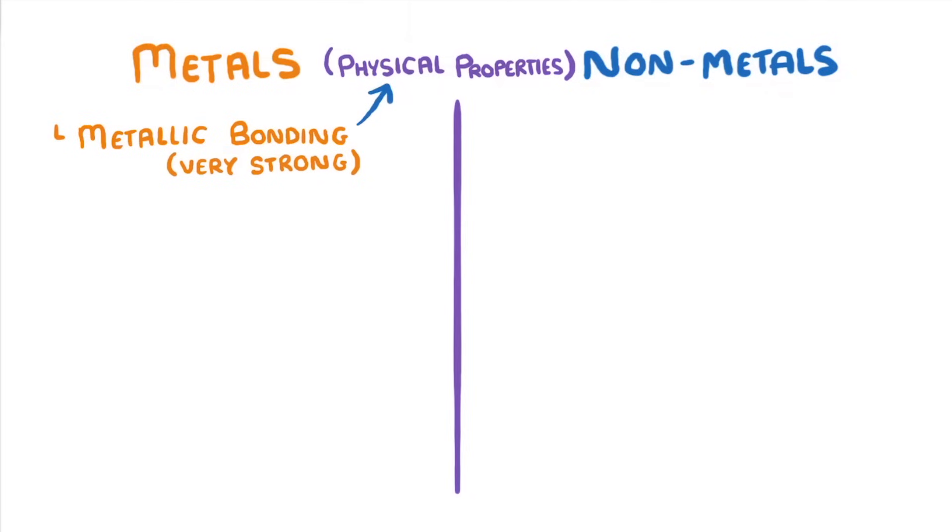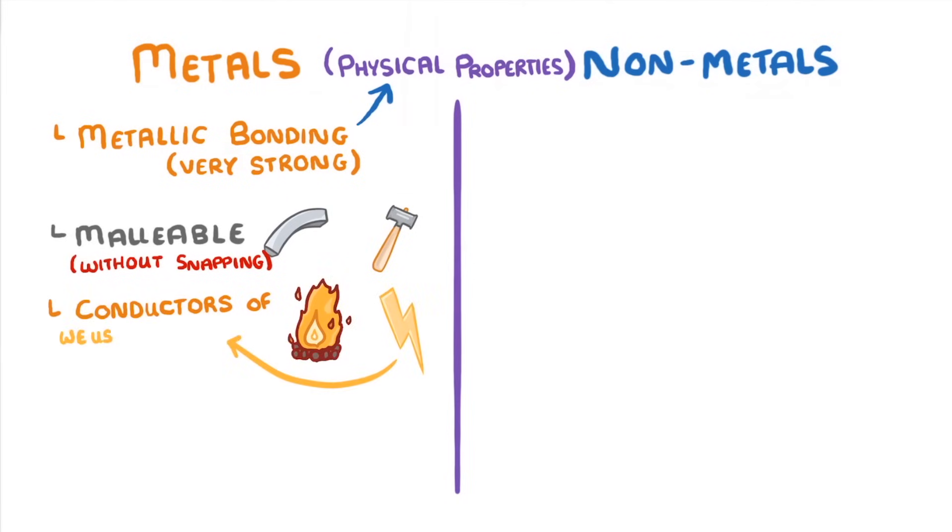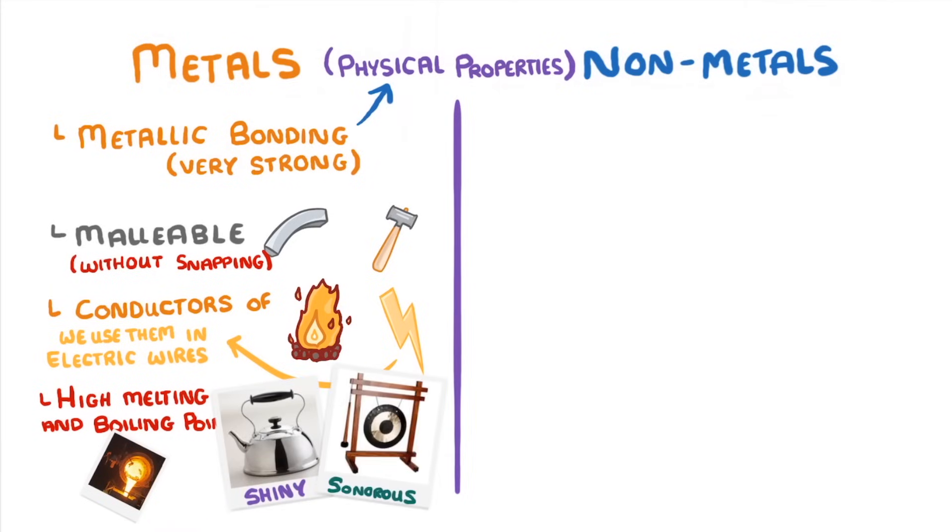As well as being strong, metals are also malleable, which means that they can be bent or hammered into shape without snapping. They're also great conductors of heat and electricity, which is why we use them in electric wires. And nearly all of them have high melting and boiling points. In fact, some of them still won't have melted at 2000 degrees. Other properties include being shiny and being sonorous, which means they create a ringing sound when you hit them.